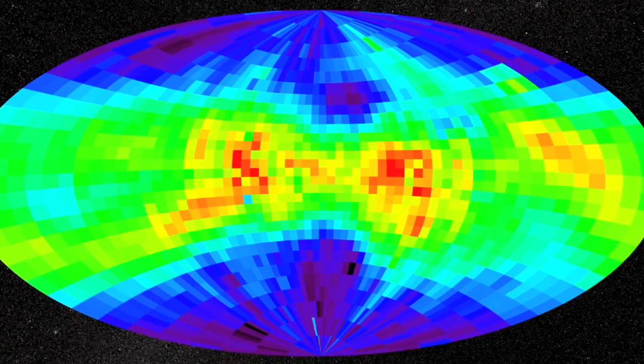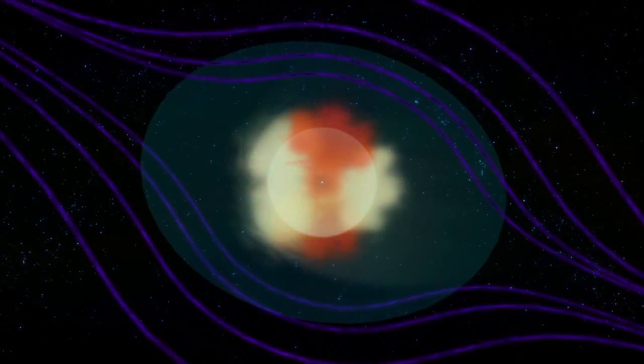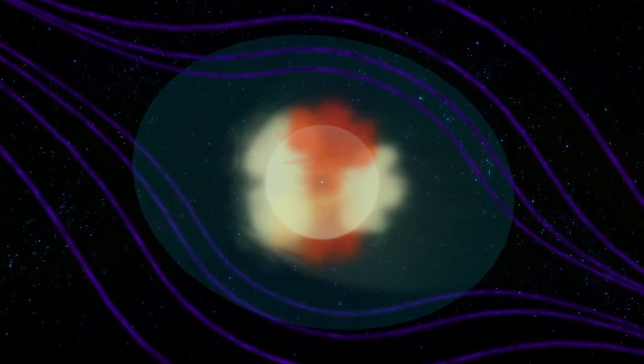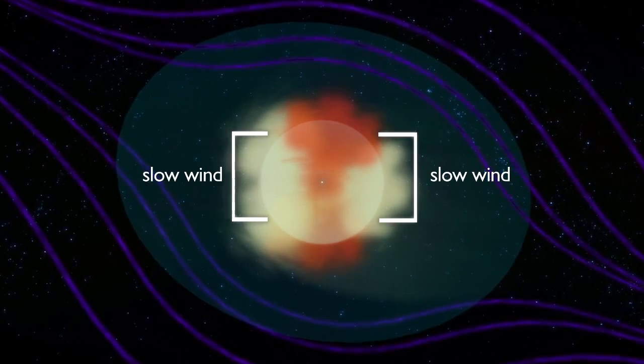Based on the map of the heliotail, if we could look straight down the tail, we would see a shape a little like a four-leaf clover. The two side leaves are filled with slow-moving particles, and the upper and lower leaves with fast ones.